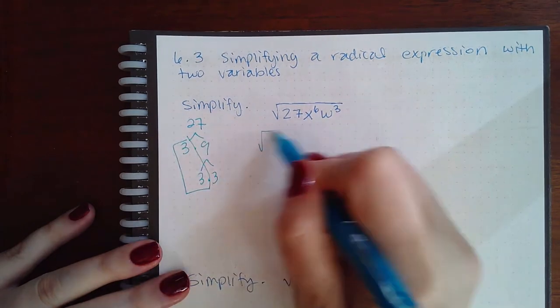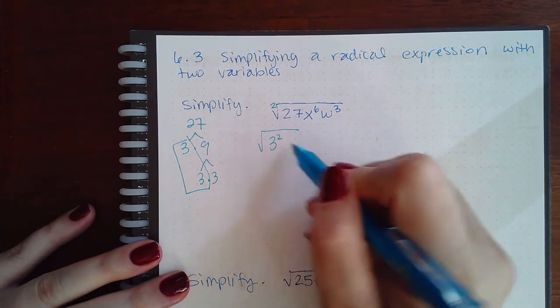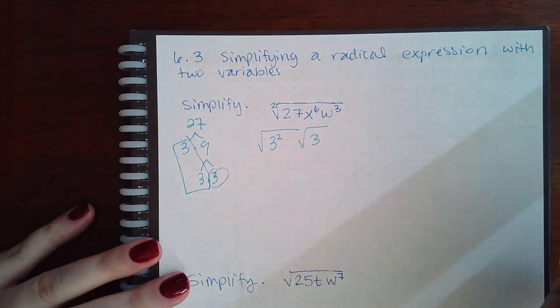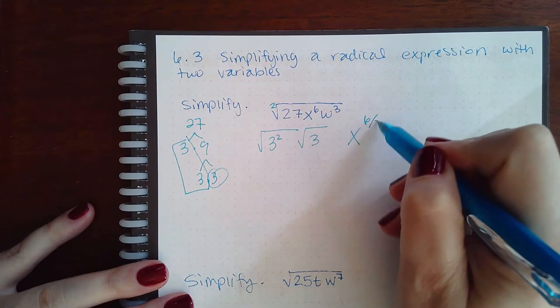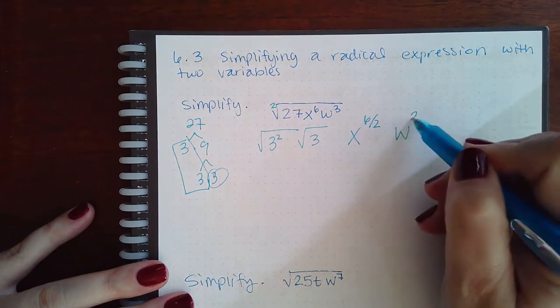a pair because of the square root, but then I have this extra 3. In the square root here, we're going to have x to the 6 over 2, and then we're going to have w to the 3 over 2.